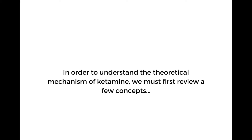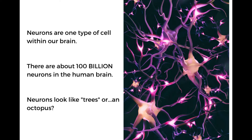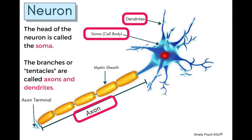In order to understand the theoretical mechanism of ketamine, we must first review a few concepts. Neurons are one type of cell within our brain. There are about 100 billion neurons in the human brain, and neurons look like trees or an octopus. The head of the neuron is called the soma, and the branches or tentacles are called axons and dendrites.